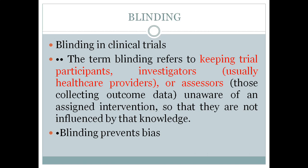There are basically three types of blinding: single blind, double blind, and triple blind studies. The most commonly used is the double blind study. Blinding refers to keeping certain groups unaware of the intervention. The first group is the participants, who receive the intervention. The second group is the investigators — the doctors or clinical trial personnel who give the intervention. The third group is the assessors — those collecting outcome data, such as measuring blood pressure before and after the study.